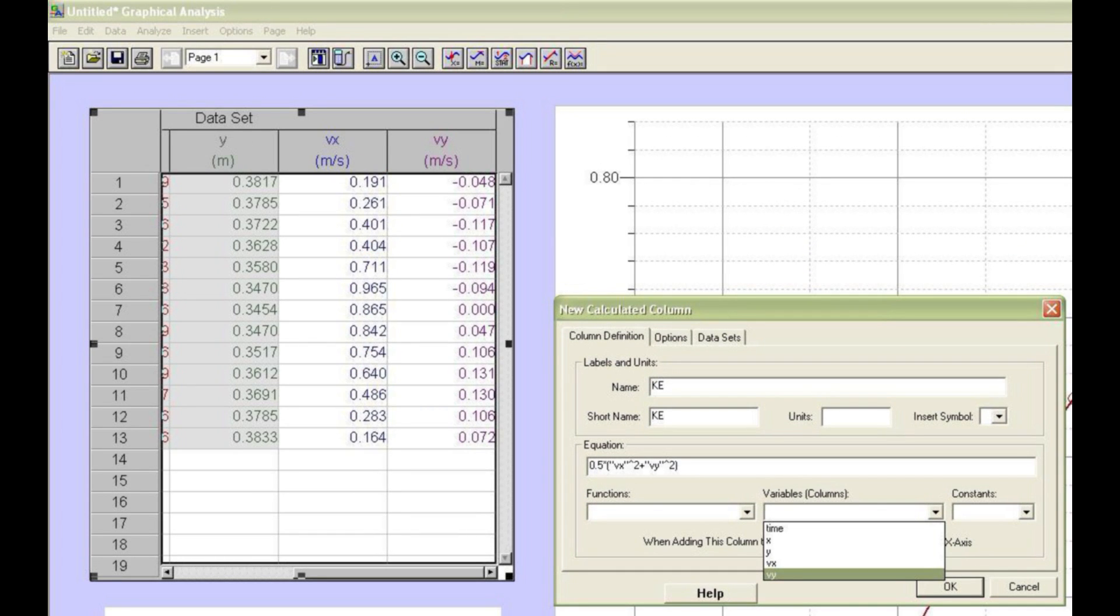Now create a column representing the kinetic energy per unit mass. We use the energy per unit mass since we have not measured the mass of the pendulum bob and don't need to. The kinetic energy per unit mass will be one half v squared, or 0.5 times the quantity vx squared plus vy squared.